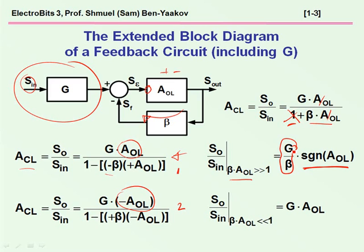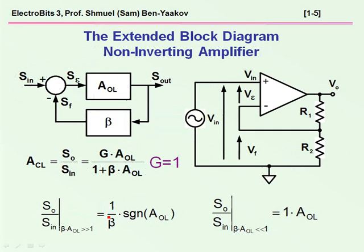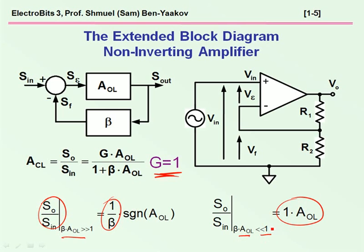In the case of beta·A smaller than 1, the gain will be G times A open loop, because when beta·A is smaller than 1, the denominator term is neglected and we get G times A open loop. For the non-inverting amplifier, we do not need to introduce G, because G is actually equal to 1. Consequently, the gain for beta·A larger than 1 is just 1 over beta, and for the region where beta·A is smaller than 1, it goes back to A open loop — as one would expect, because when beta is very small there is in fact no feedback, and then the gain will be just A open loop.